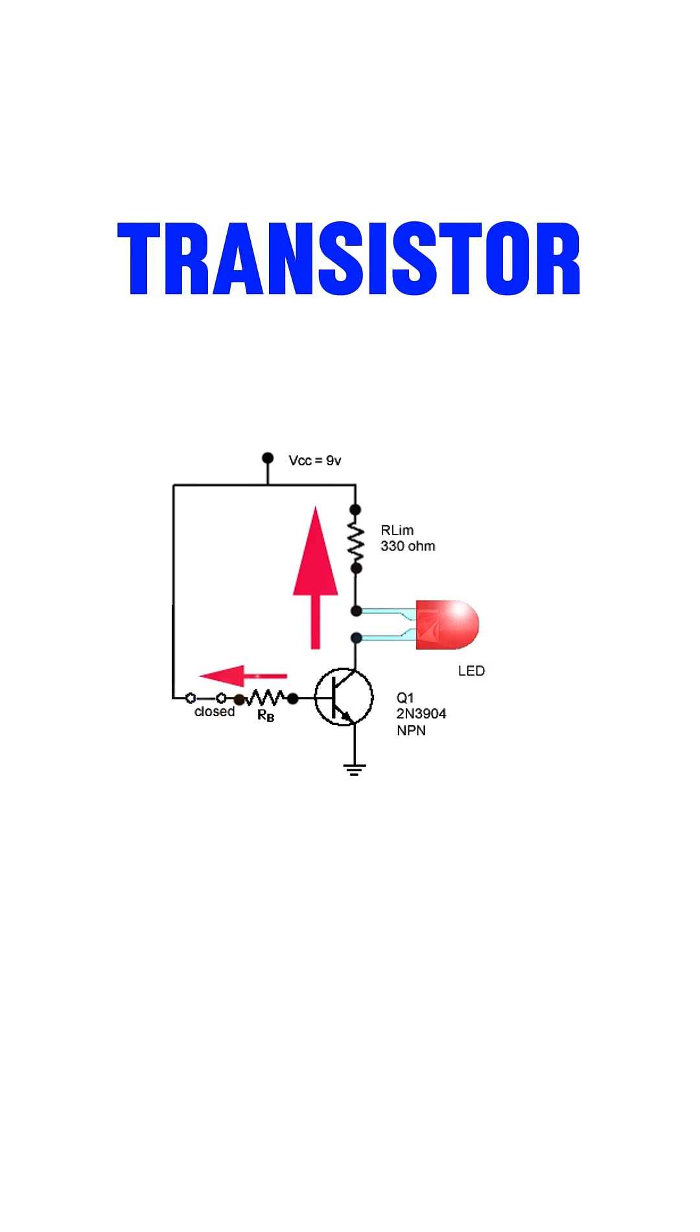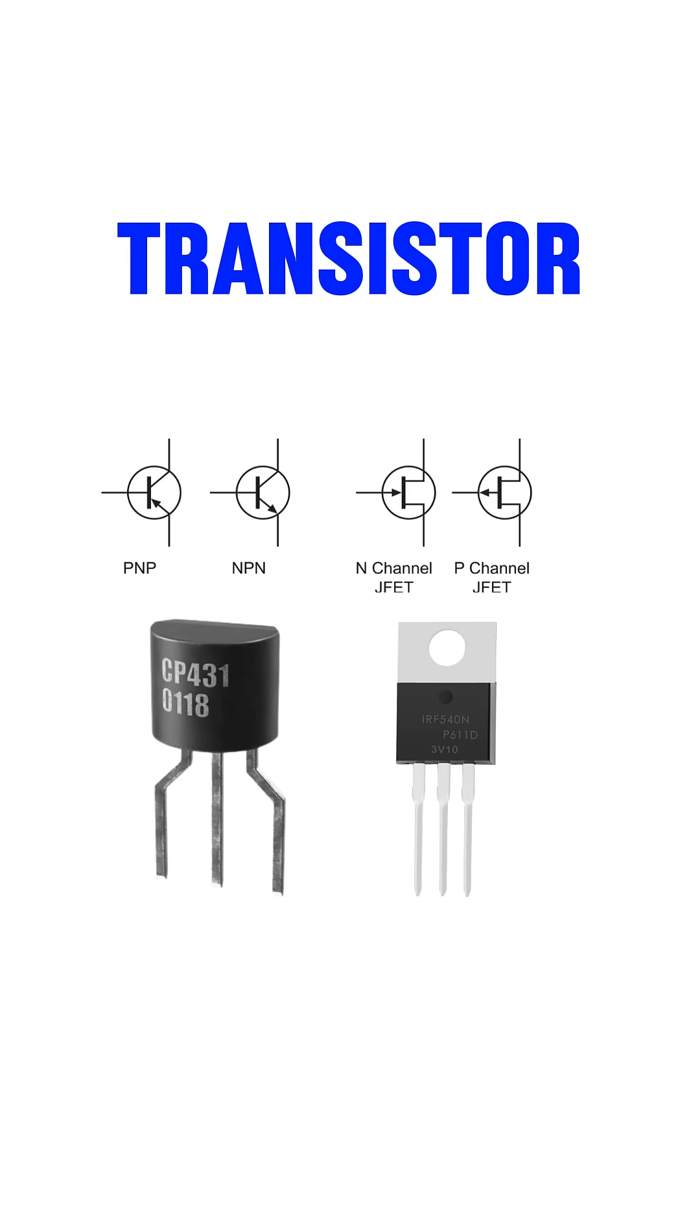The two mainly used types are bipolar junction transistors, known as BJTs, and the other type is field effect transistors, also known as FETs. Let's talk about each of their types.